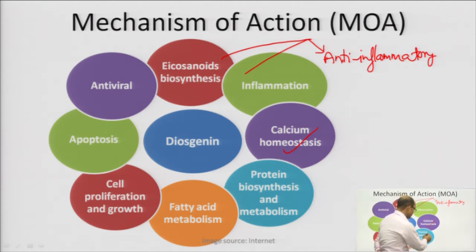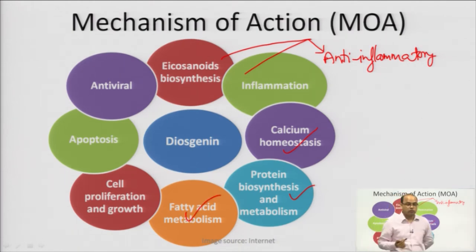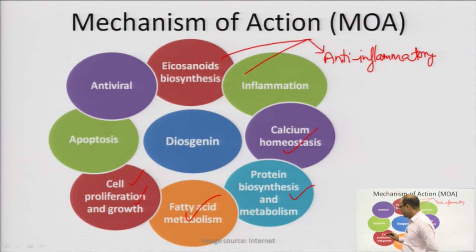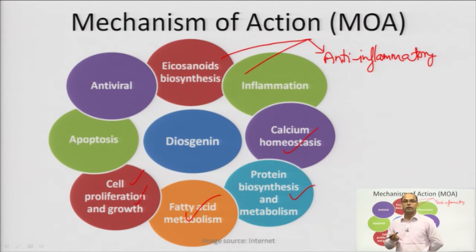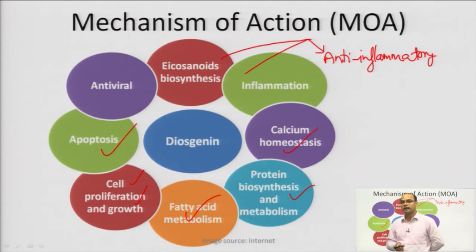Diosgenin also helps in the biosynthesis and metabolism of protein in the body, and it helps in metabolism of fatty acids. It also has involvement in cell proliferation and growth, and due to this activity diosgenin is especially used for preparation of hormonal preparations. It also induces apoptosis — programmed cell death — and in this way it also acts as an anti-cancer drug.